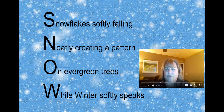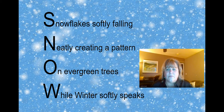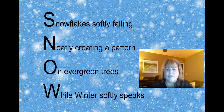Here's a lovely acrostic poem about snow. See how you can see the word snow written vertically down the left side — S-N-O-W, that spells snow. Now listen as I read it and use your imagination to picture the scene described by the words. Snowflakes softly falling, neatly creating a pattern on evergreen trees while winter softly speaks. When I read that poem I can see the pine trees in my yard covered in snow. What did you picture in your head?